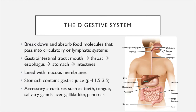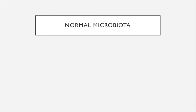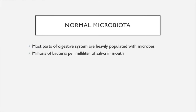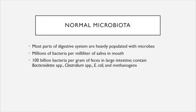Your digestive system is the most heavily populated body system out of them all. There are millions of bacteria per milliliter of saliva found in your mouth. There are around 100 billion bacteria per gram of feces in the large intestines.